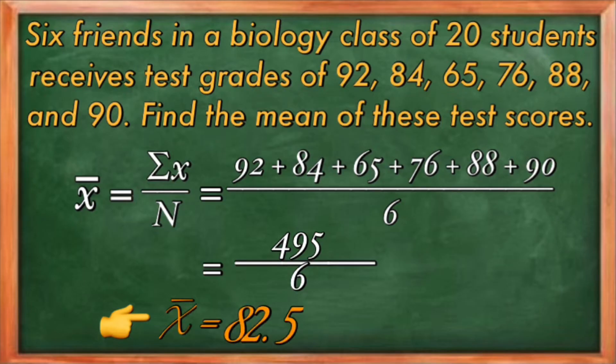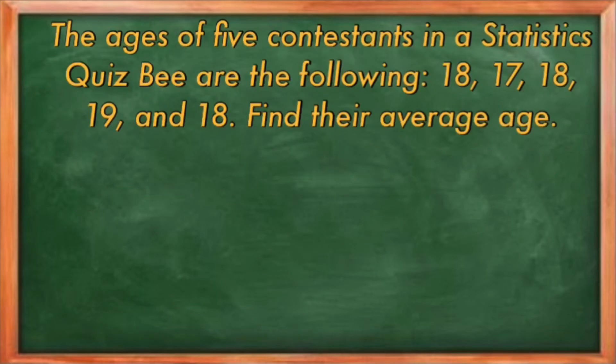Therefore, the mean test score of six students is 82.5. Simple as that. Now let us try to have another example. The age of five contestants in a statistics quiz bee are the following: 18, 17, 18, 19, and 18. Now let us try to find their average age.